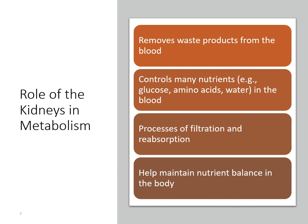The kidney also plays a role in metabolism. It removes waste products from the blood and, along with the liver, controls nutrient levels in the blood. It filters out what needs to be removed and reabsorbs what the body still needs. If blood glucose is low, the kidneys won't filter out glucose. If blood glucose is high, they'll help filter some out. This helps maintain nutrient balance for things like glucose, amino acids, vitamins, water, and minerals.